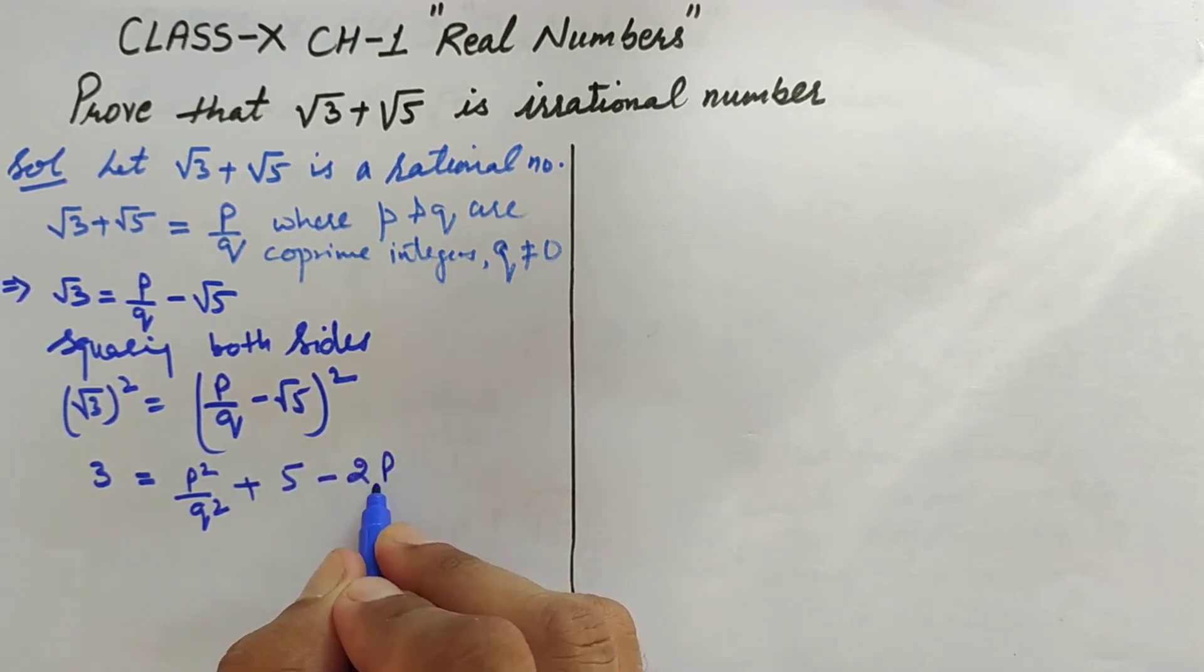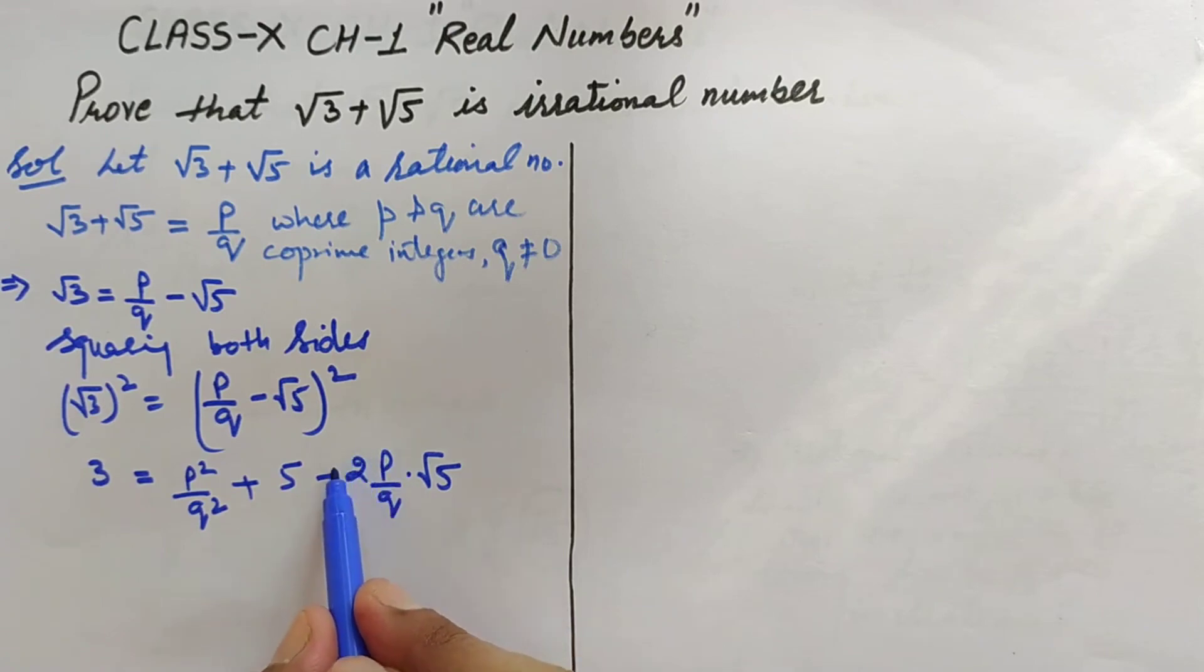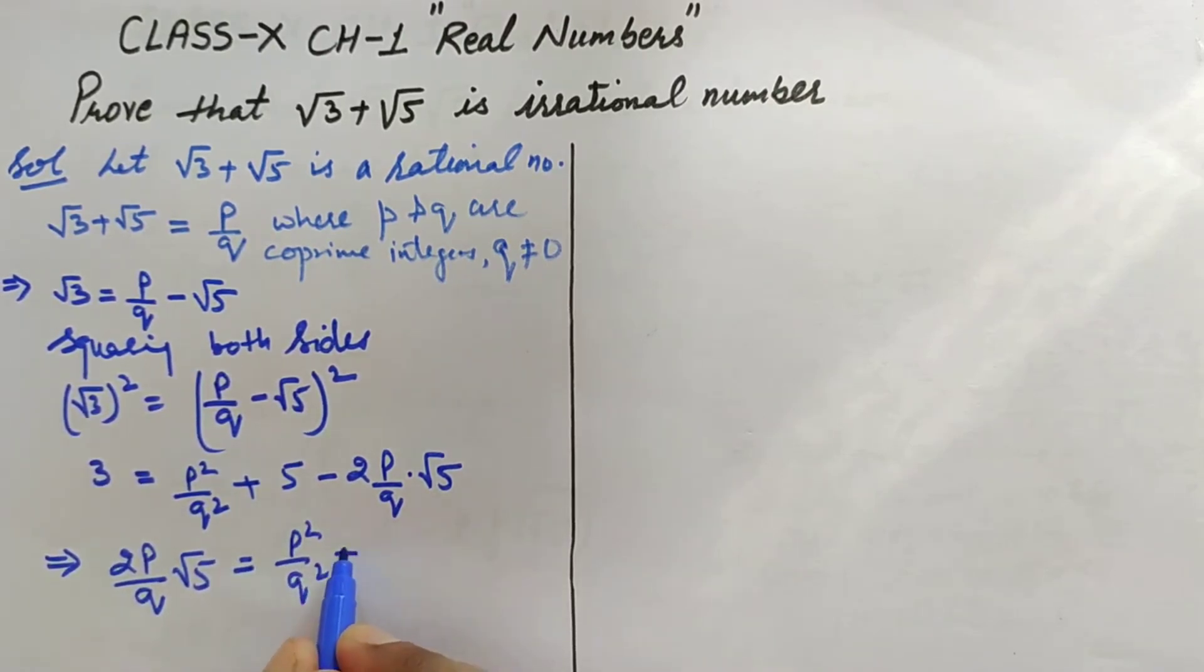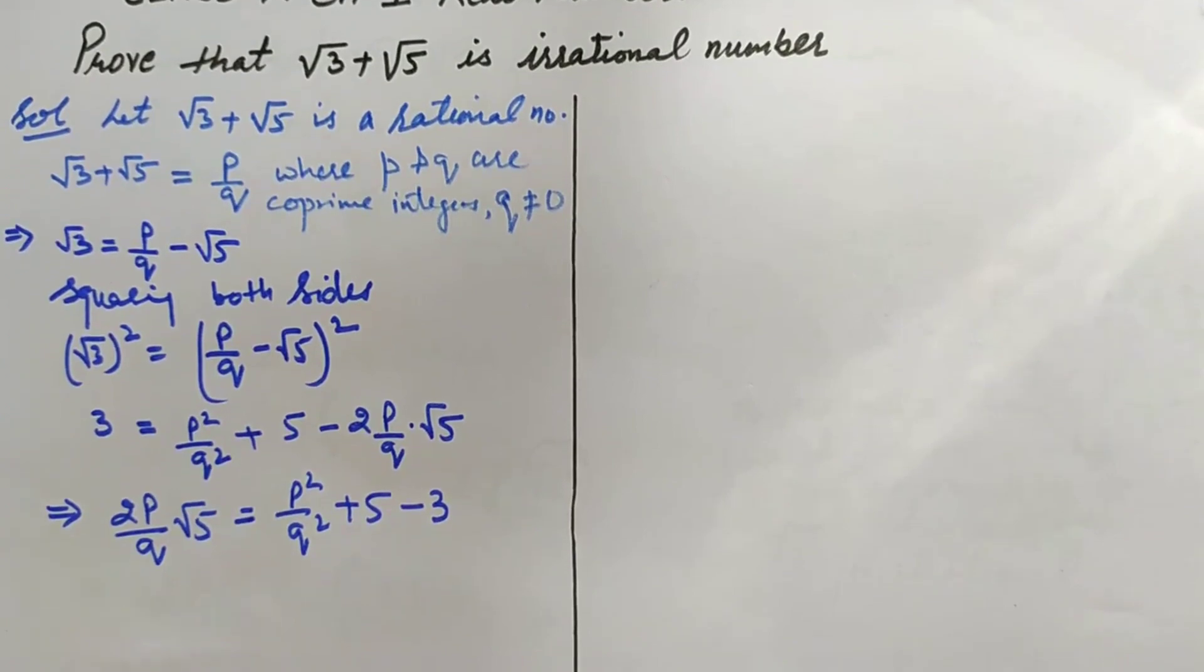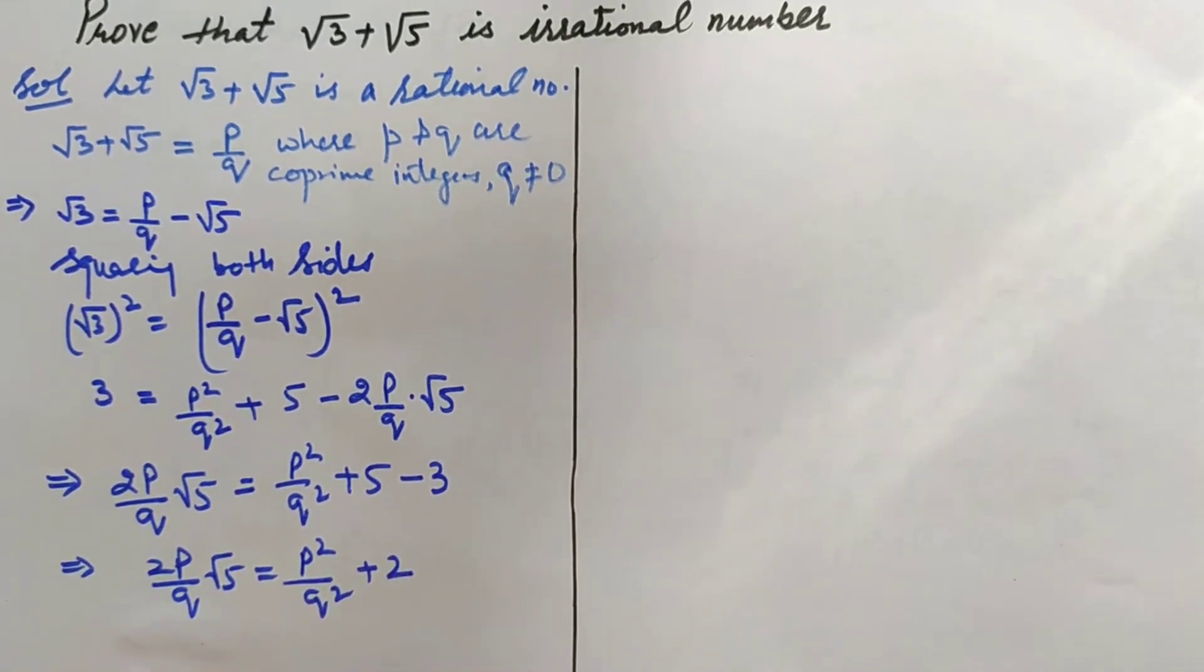Now what we do is we'll take √5 on one side and rest all the things to the other side. We'll bring this full portion to the left-hand side and 3 to the right-hand side. So it becomes 2(p/q)√5 = p²/q² + 5 - 3. Our motive is to separate √5.